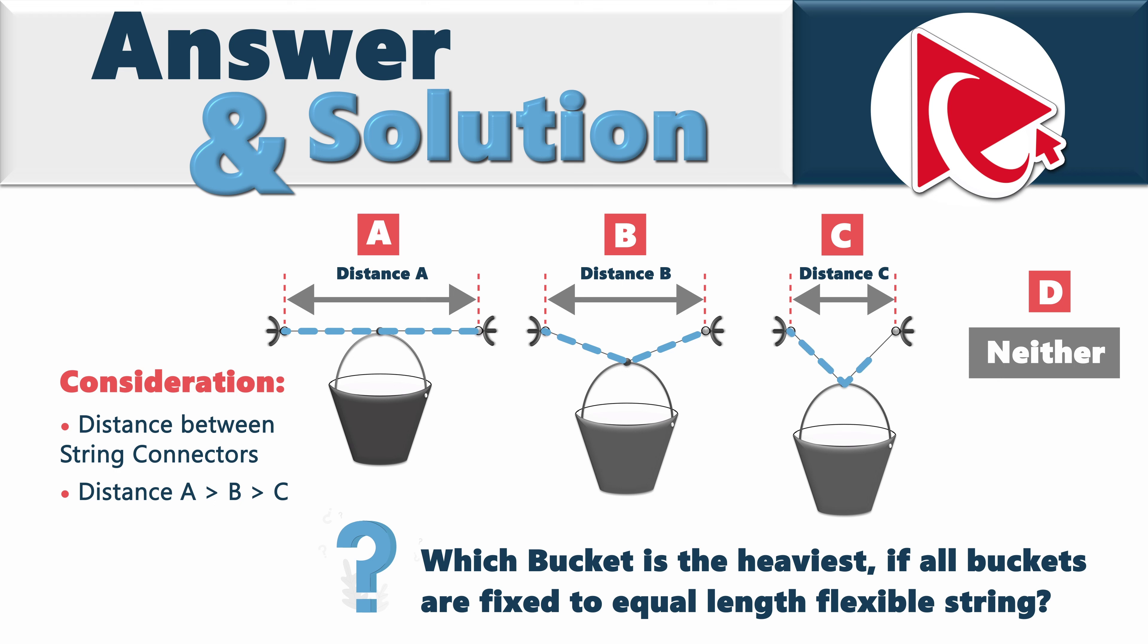Because the distance shortens between the string connectors, and distance A is greater than distance B, which is greater than distance C, this might explain why bucket B and bucket C are lower still. But it becomes obvious that because the distance between connectors is shortening, it's impossible to determine which bucket is the heaviest, since shortening of the distance from A to C can explain lower positioning of the bucket, even if buckets would have the same weight.